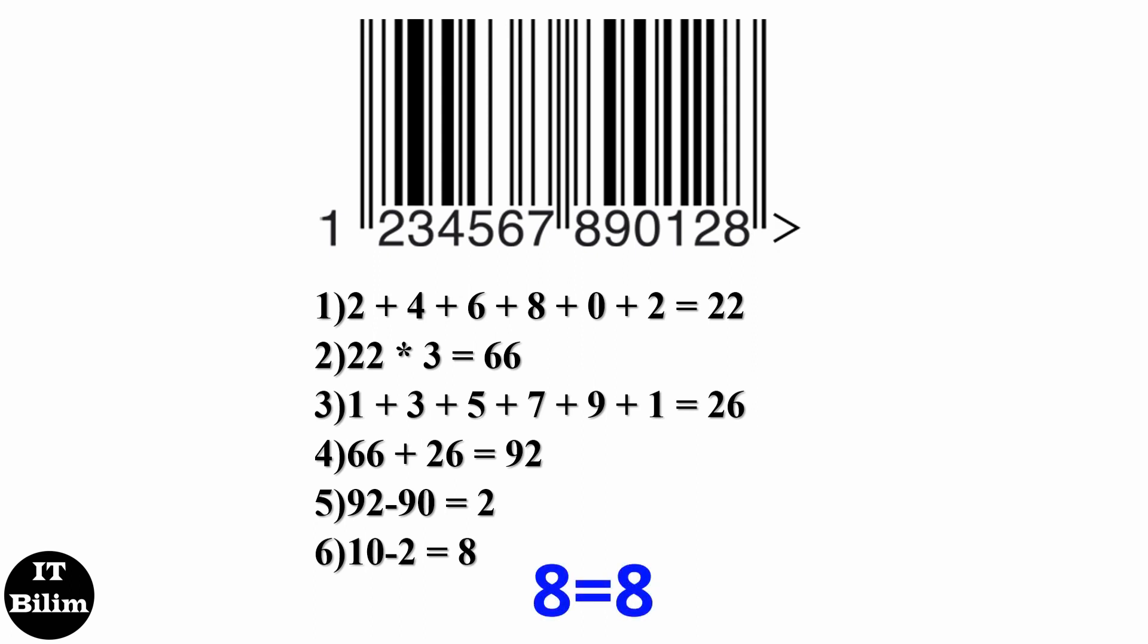If the figure obtained as a result of the calculation coincides with the check digit in the barcode, the goods were produced legally. If the figure obtained does not coincide with the check digit in the barcode, the goods have been produced illegally.